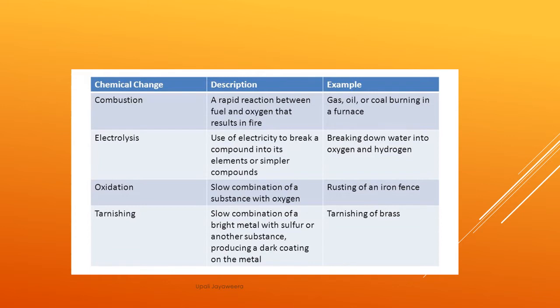Now we'll discuss some types of chemical changes. Combustion: a rapid reaction between fuel and oxygen that results in fire — for example, gas, oil, or coal burning in a furnace. Electrolysis: the use of electricity to break a compound into its elements or simpler compounds — for example, breaking down water into oxygen and hydrogen. Oxidation: slow combination of a substance with oxygen — for example, rusting of an iron fence. Tarnishing: slow combination of a bright metal with sulphur or another substance, producing a dark coating on the metal — for example, tarnishing of brass.